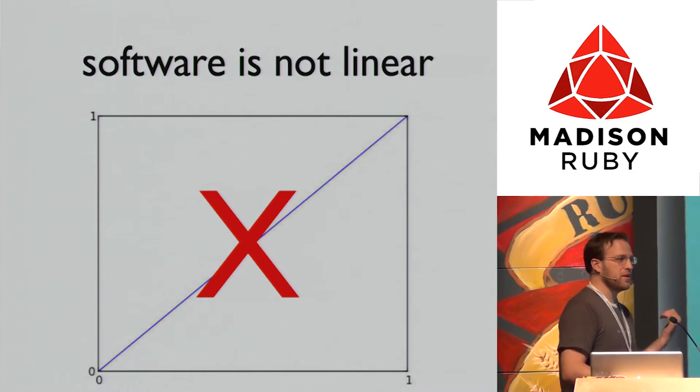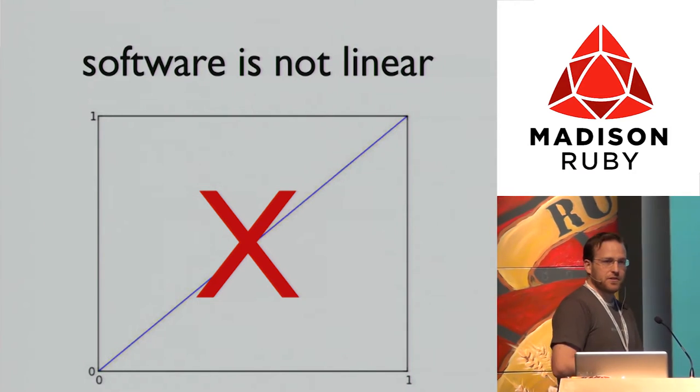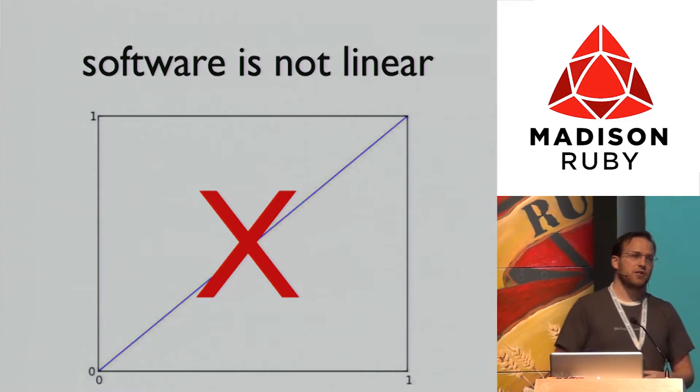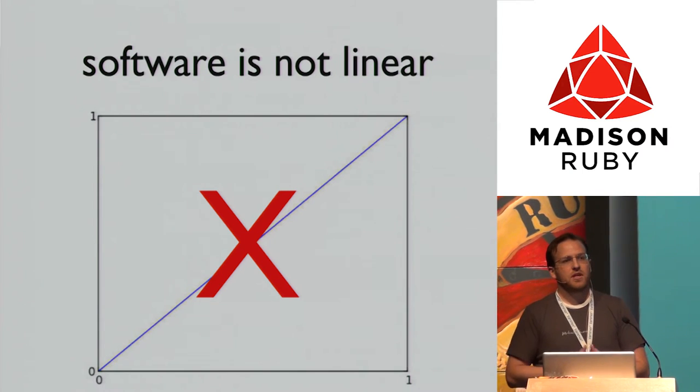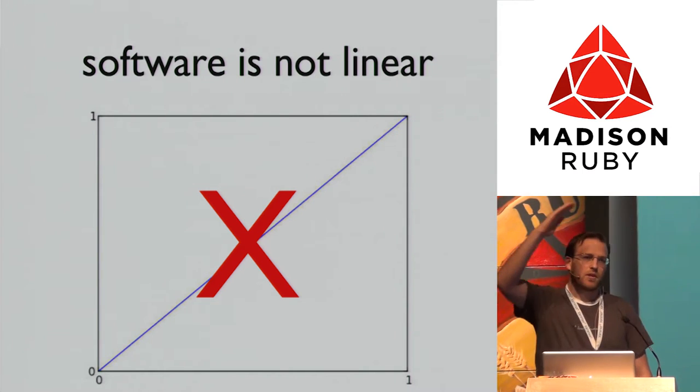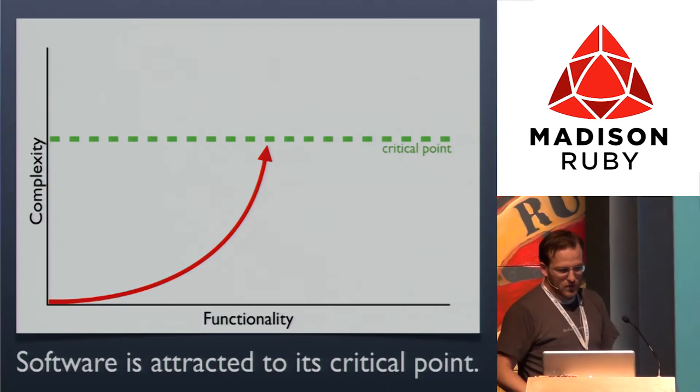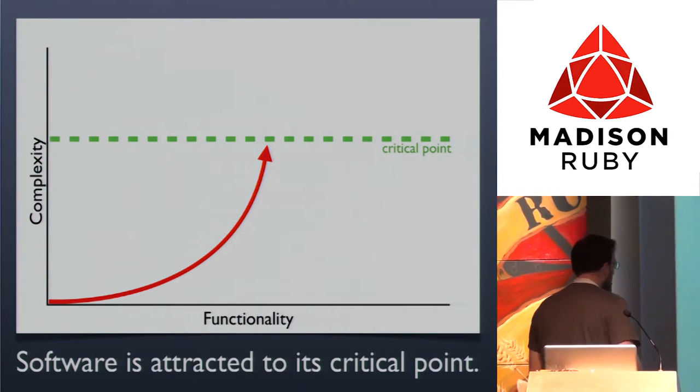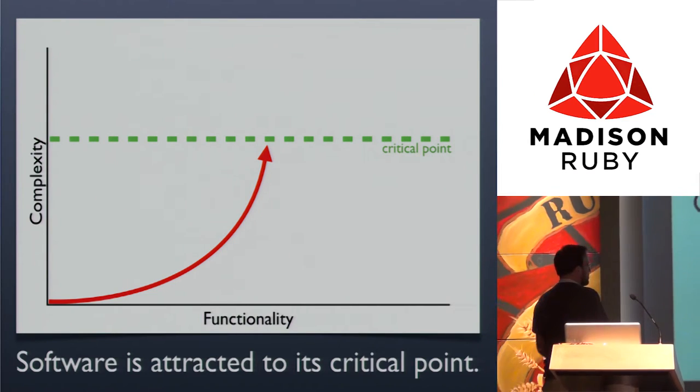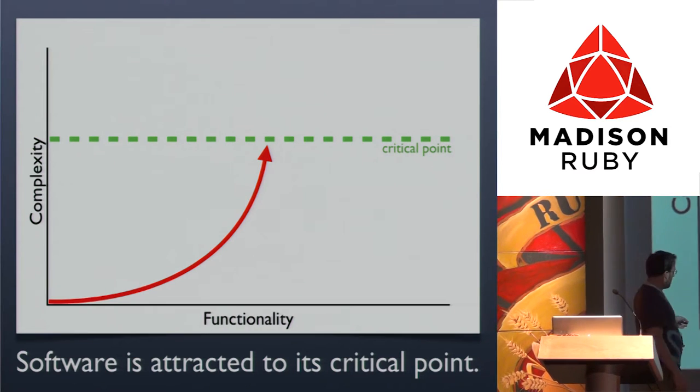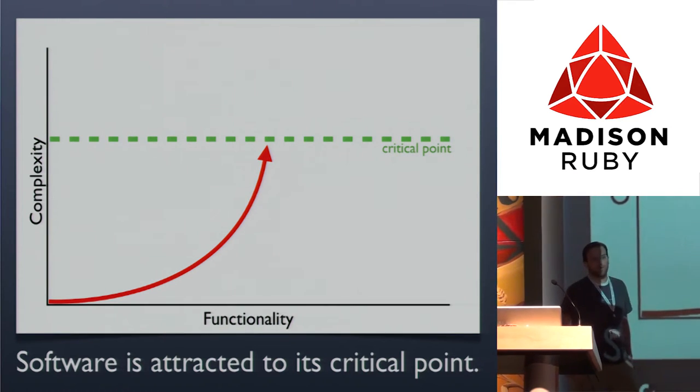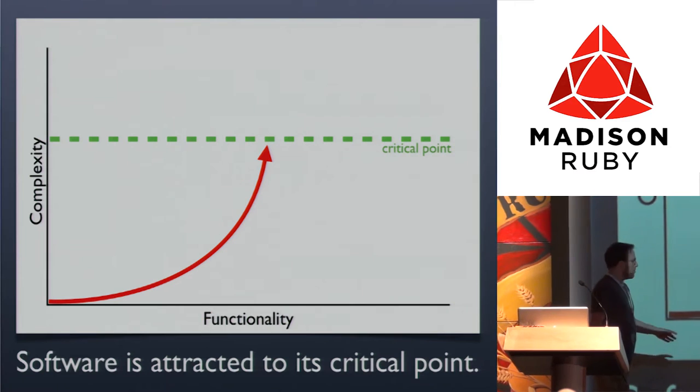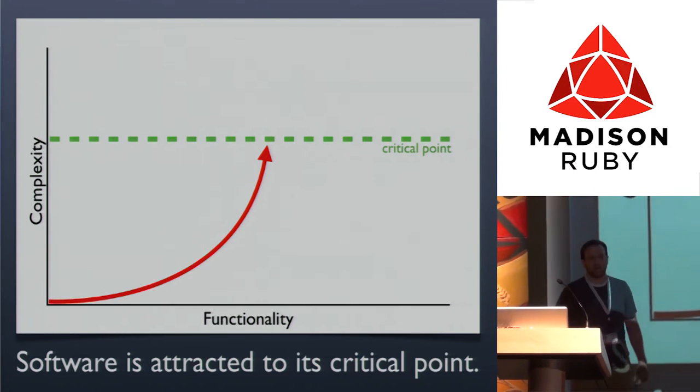Now that chart is a little misleading because software is not linear. As we add more change and grow our software, it's not on a consistent slope. I think it works more like this: early on you can get away with having a lot of change with small increases in complexity, but then over time it's more exponential.